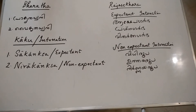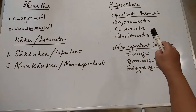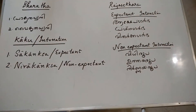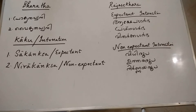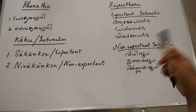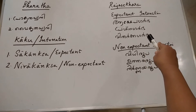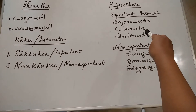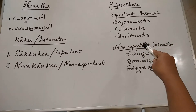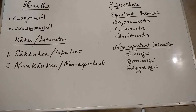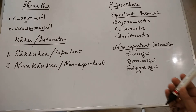Rajashekhar divided expectant intonation into three. The first one, Aakshhevagarbha, is an objection or disapproval — when you want to contradict somebody or disapprove some idea, you are using expectant intonation called Aakshhevagarbha. The second classification is question — when you are interrogating somebody, you use the expectant intonation called Prashnagarbha. Then Vidarkagarbha — when you are in doubt, skeptical or dubious about something, expressing uncertainty, that is Vidarkagarbha.